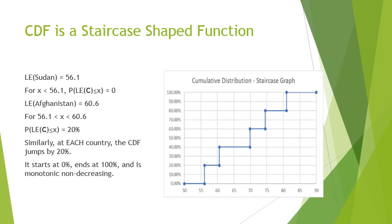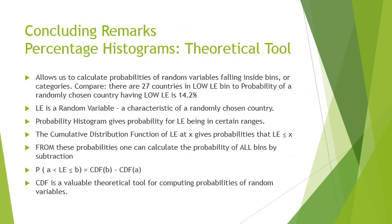When x exceeds 85, which is above the life expectancy of all countries, the probability that any chosen country's life expectancy is less than x is 100 percent. The graph is flat at 100 percent. This basic shape of the CDF is called a staircase because it looks like one. This concludes the explanation of the CDF.